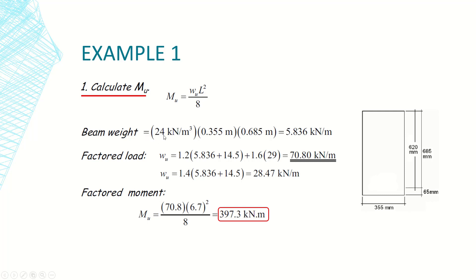To determine the beam self-weight, I multiply the unit weight of concrete — 24 kilonewtons per cubic meter — by the cross-sectional area of the beam: 0.355 meters (width) multiplied by 0.685 meters (height). This gives the distributed self-weight of the beam.